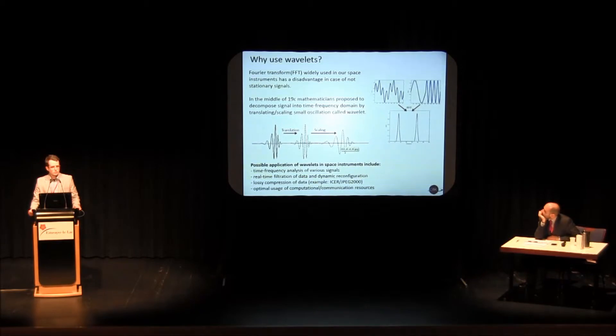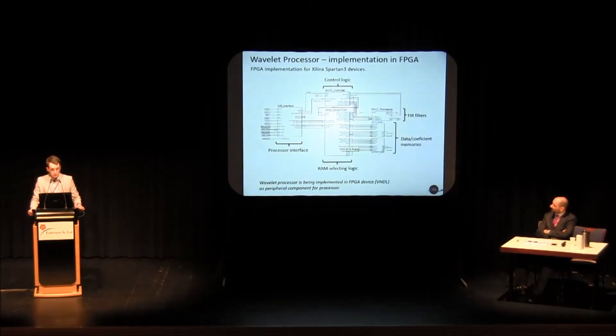This gives us possibility to analyze the signal in time frequency domain. Since the wavelets are a bit faster than FFT, they can be used in real-time, almost in real-time. As you might know, wavelets are also used in JPEG 2000 to compress the data. The compression, as far as I know, is the best with wavelets. All together, this gives us possibility to use all the resources in a more optimal way.